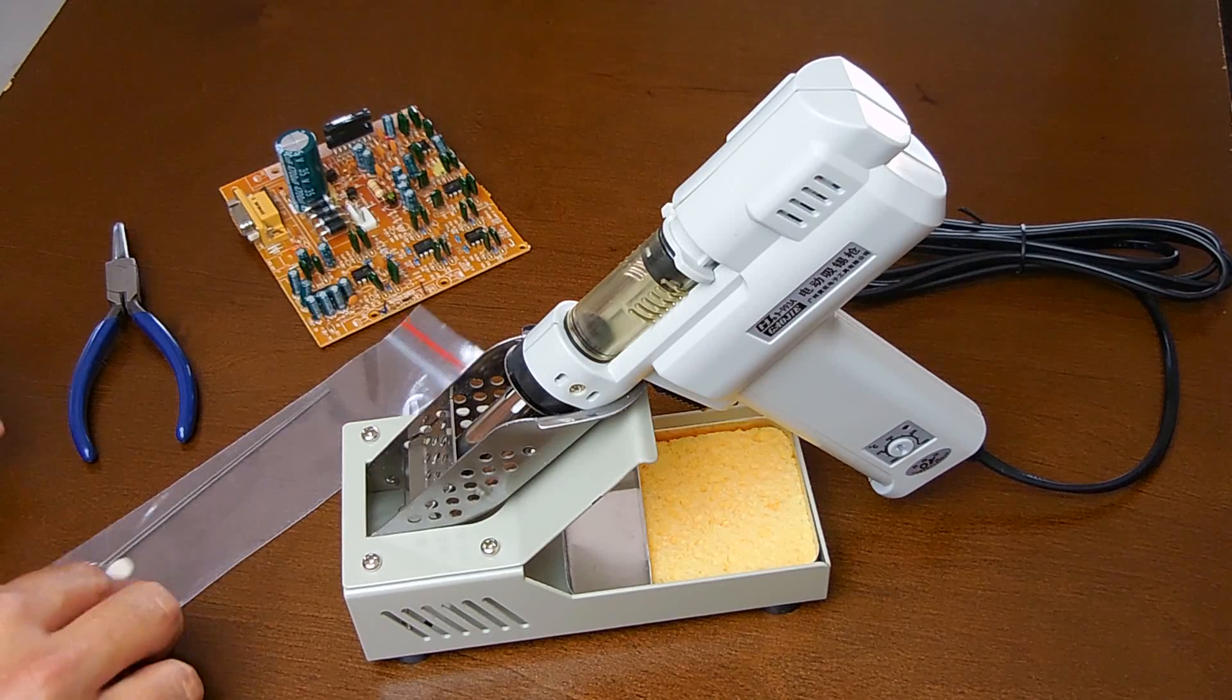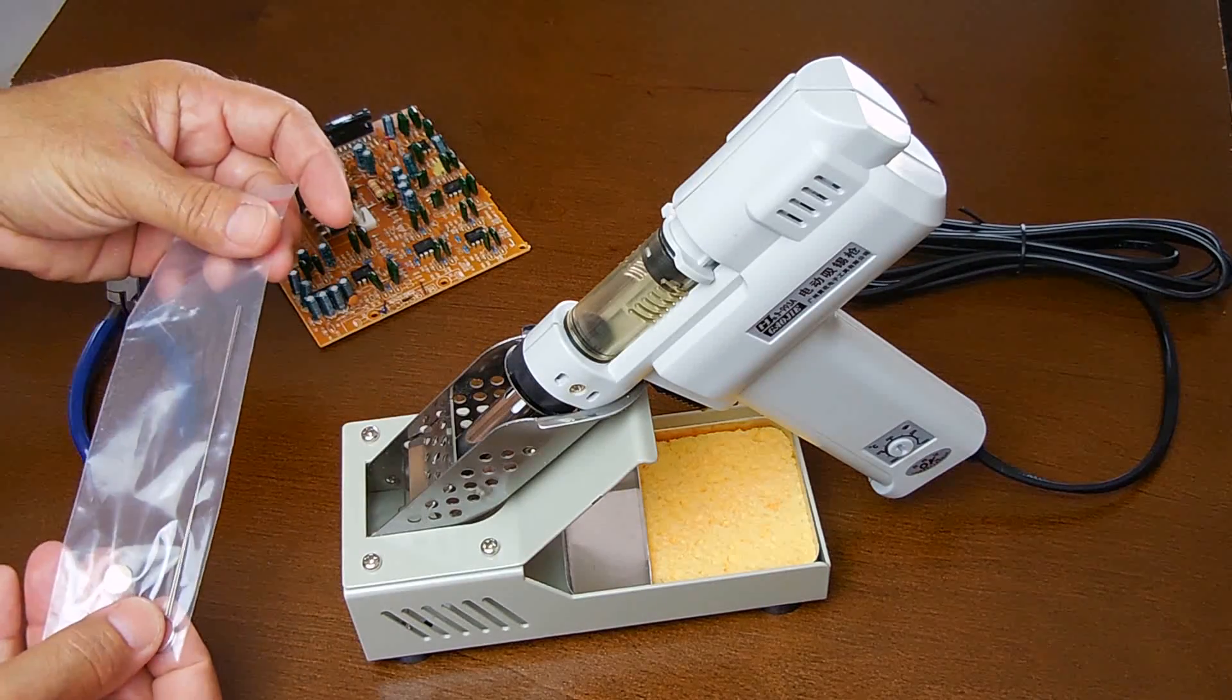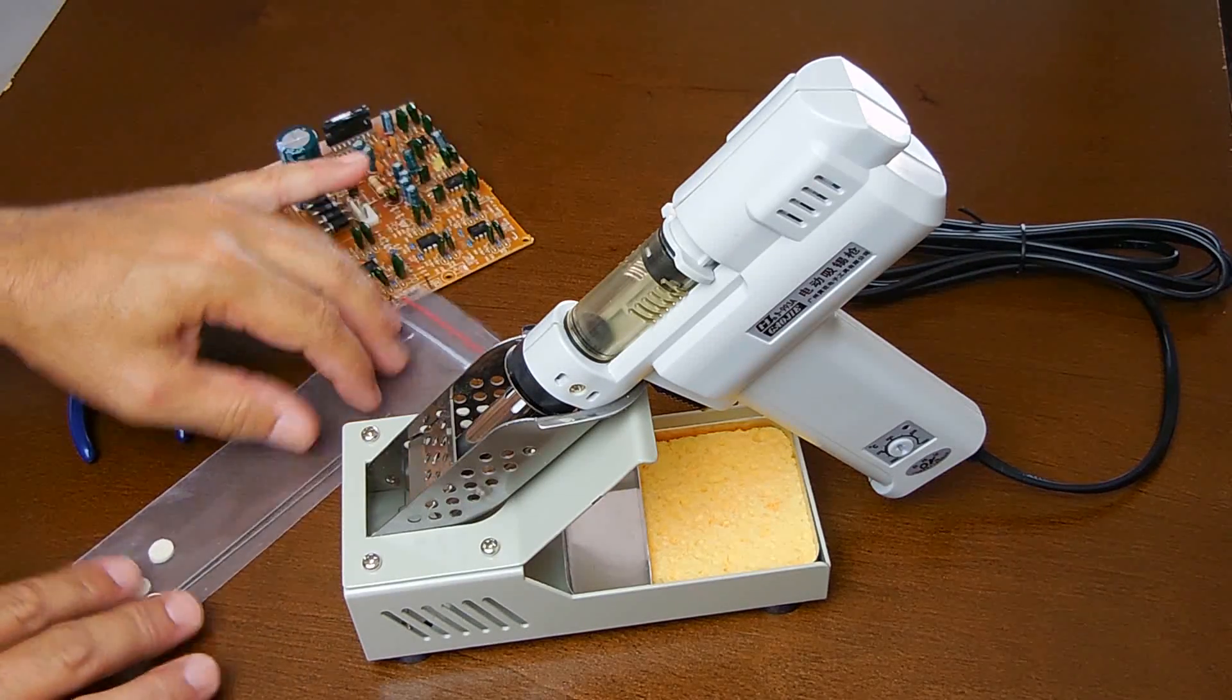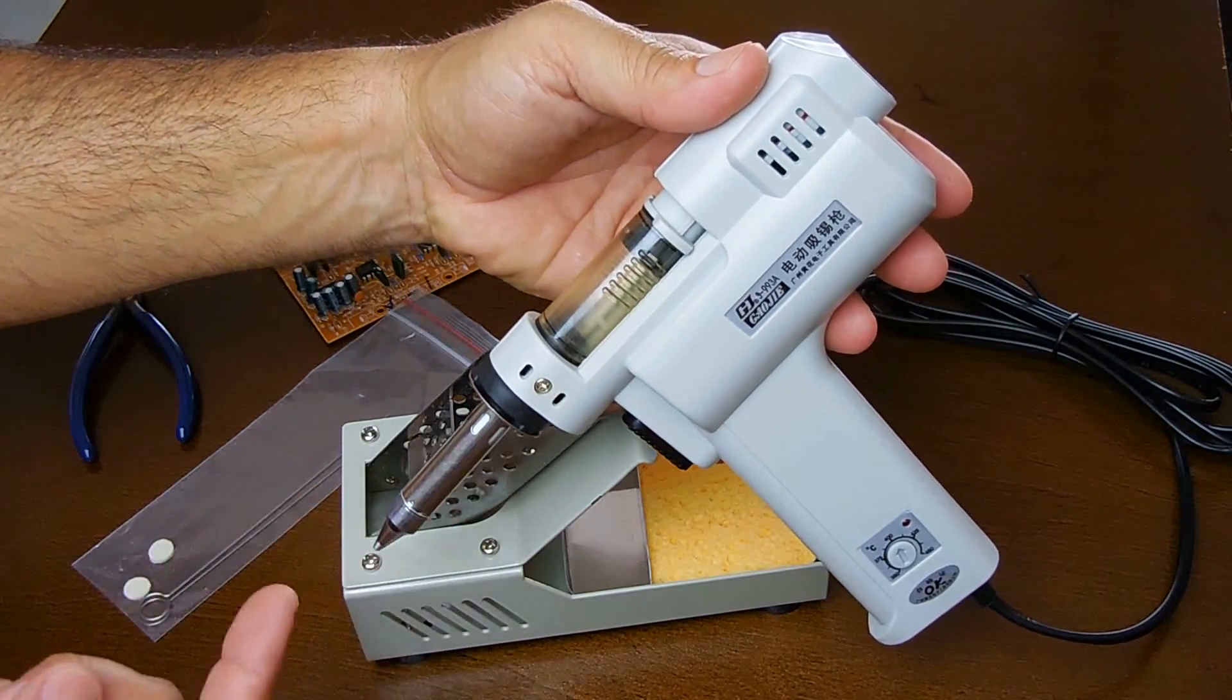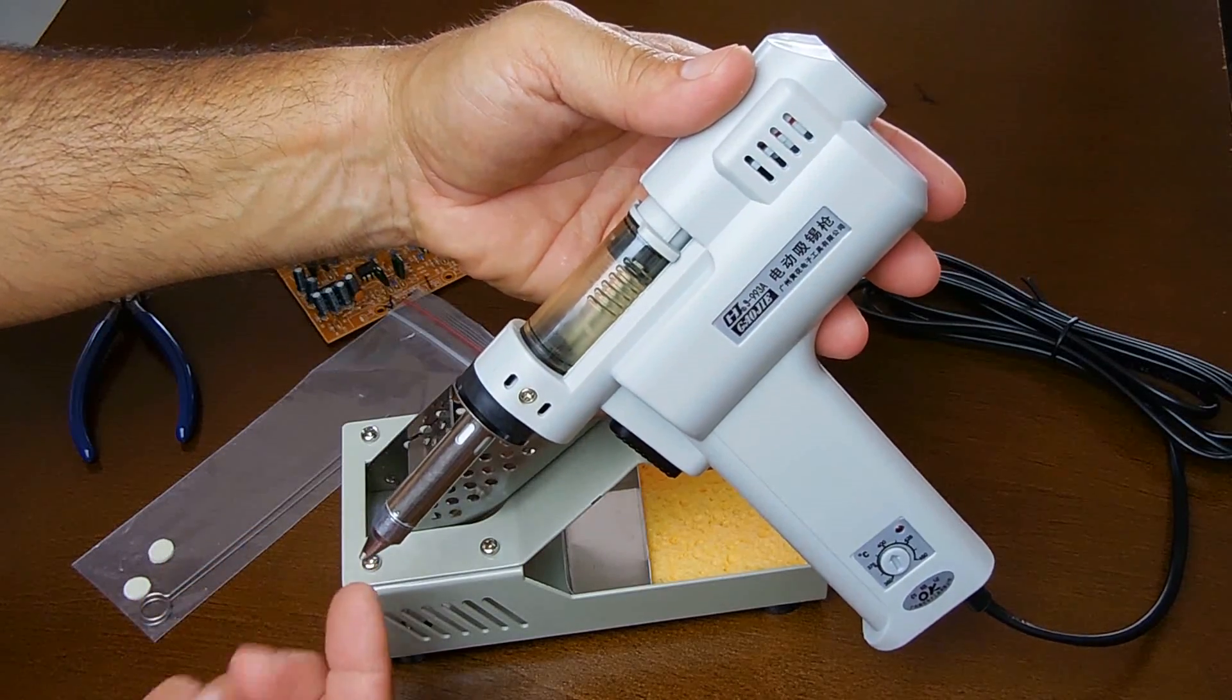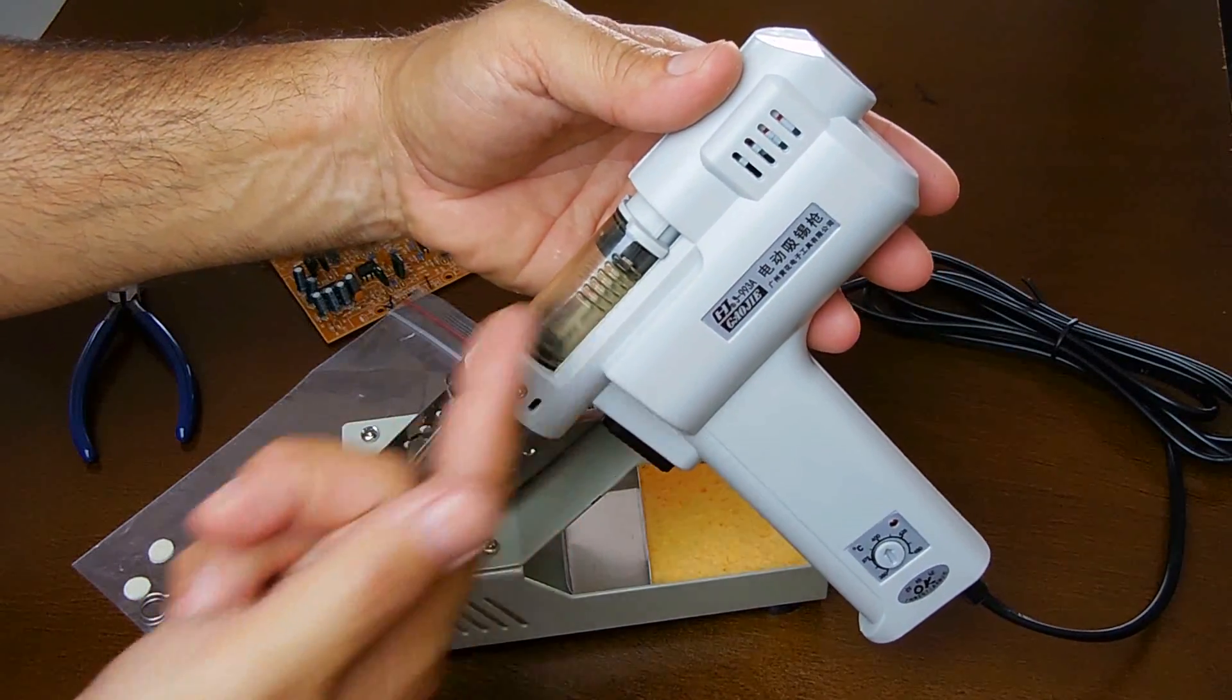Also included are these two cleaning tools. These reach all the way inside the tip right here and clear away any solder that may be blocking the path from here to the suction tube.